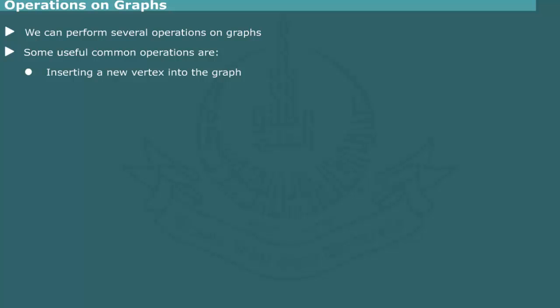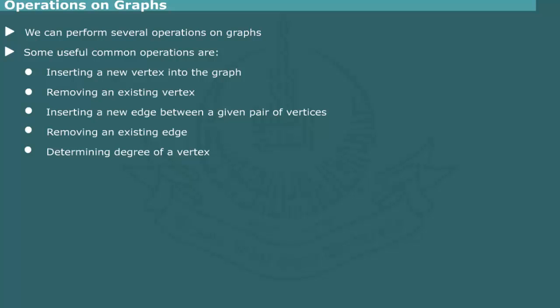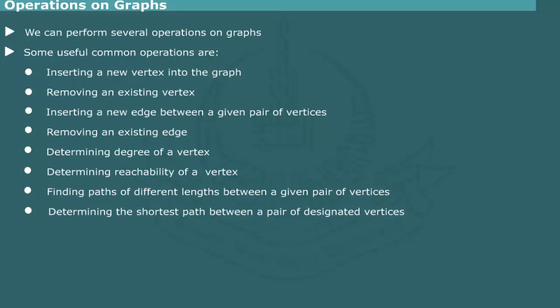Inserting a new vertex into the graph. Removing an existing vertex. Inserting a new edge between a given pair of vertices. Removing an existing edge. Determining degree of a vertex. Determining reachability of a vertex. Finding paths of different lengths between a given pair of vertices. Determining the shortest path between a pair of designated vertices. Traversing a graph.